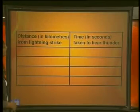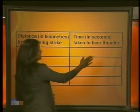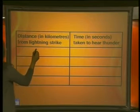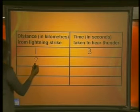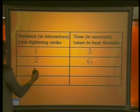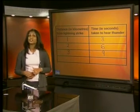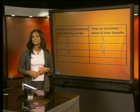Let's investigate how we can link this information to a linear equation by drawing up a table. In the first column I have the distance from the lightning strike in kilometers, and in the second column I have the time taken to hear thunder in seconds. When the distance is one kilometer, the time is three seconds; two kilometers gives six seconds; three kilometers gives nine seconds. But it takes time to fill this in for every possible value, so it would be easier to set up an equation that describes the situation.